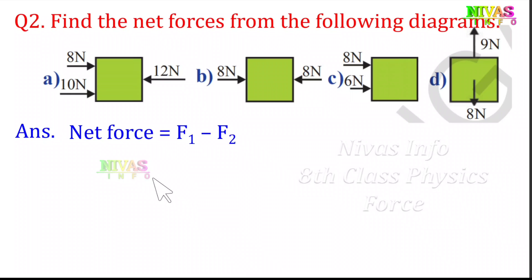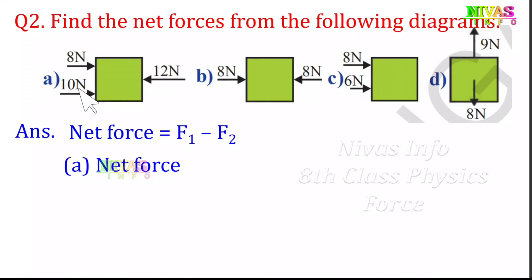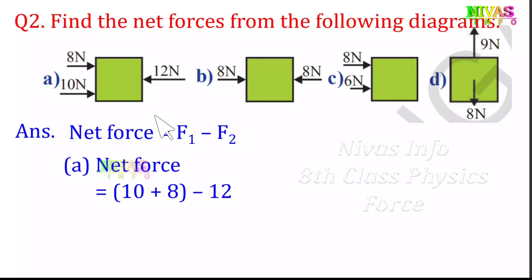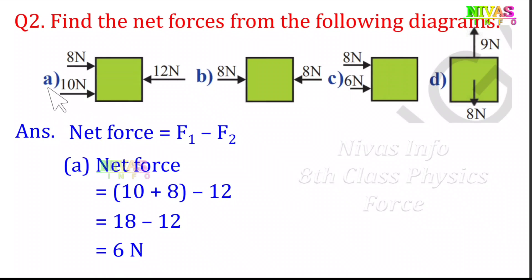Here we have two forces. Option A: the left side has 12N and the right side has 18N. Net force is 18 minus 12 equals 6N. So the net force for option A is 6N. Option B: both forces are 8N and 8N, which are equal. So net force is 8 minus 8 equals 0.